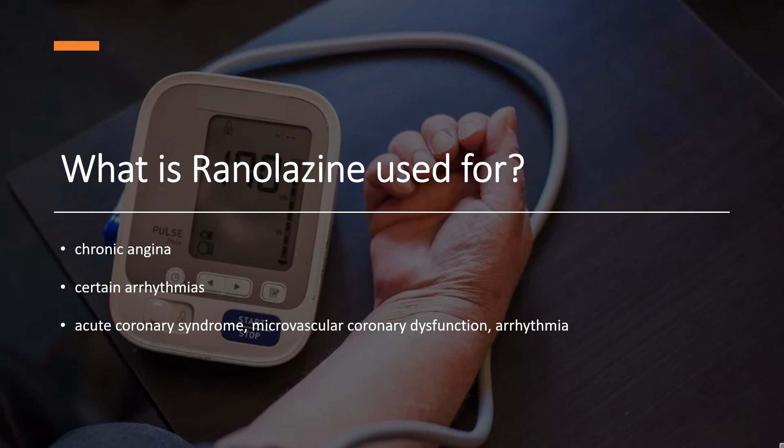Ranolazine has also been used off-label for the treatment of certain arrhythmias, including ventricular tachycardia; however, this use is not strongly supported by scientific evidence. Ranolazine has also been studied for the treatment of acute coronary syndrome, microvascular coronary dysfunction, arrhythmia, and glycemic control, which are not yet approved indications.